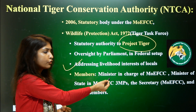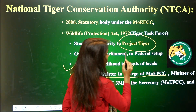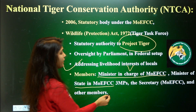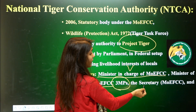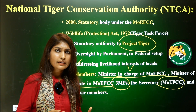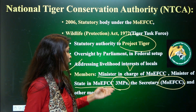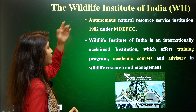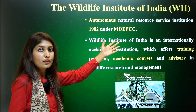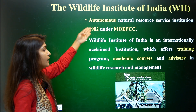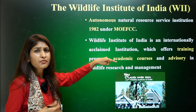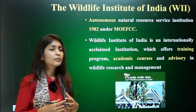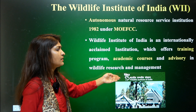The NTCA members are largely from the Ministry of Environment. The minister in charge of the Ministry of Environment is the vice chairperson, and the minister of state is also vice chairperson. There are three Members of Parliament, the secretary from the Ministry of Environment, and other members including environmentalists and environment activists. The Wildlife Institute of India (WII) is also important — it is an autonomous body set up in 1982 under the Ministry of Environment.